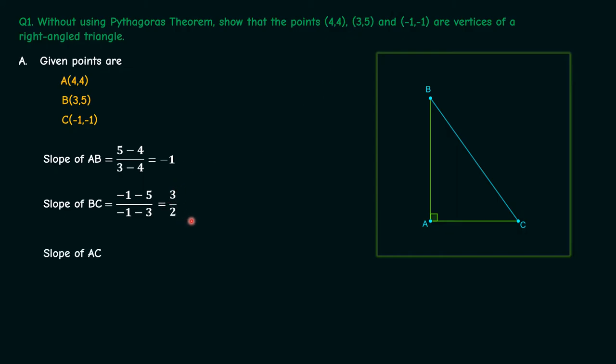And finally slope of AC is (–1–4)/(–1–4) which is 1. Now if you observe carefully, the slope of AB is minus 1 and slope of AC is 1.